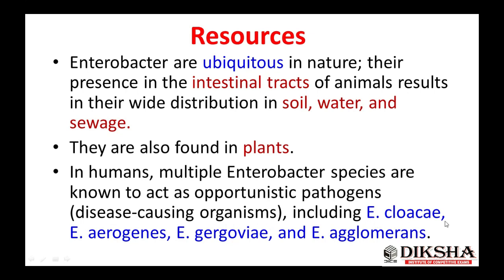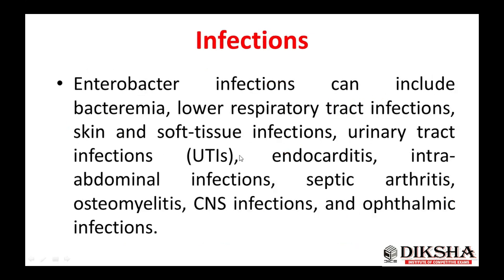Notable species include Enterobacter cloacae, Enterobacter aerogenes, Enterobacter gergoviae, and Enterobacter agglomerans. Infections caused by Enterobacter can include bacteremia, lower respiratory tract infections, skin and soft tissue infections, urinary tract infections, endocarditis, intra-abdominal infections, septic arthritis, osteomyelitis, CNS infections, and ophthalmic infections.